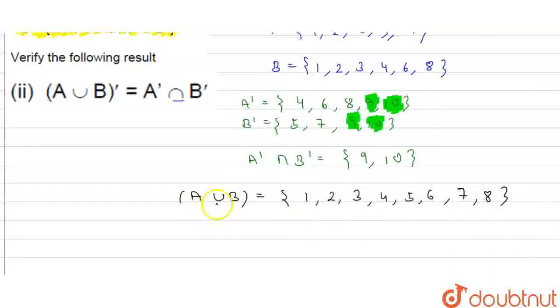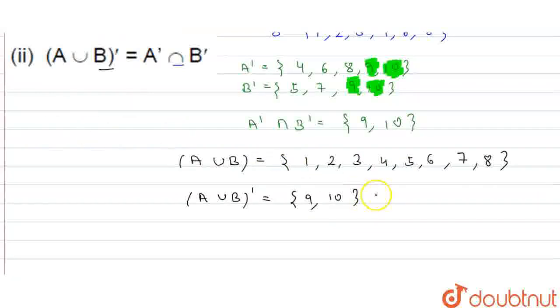Now we have A ∪ B, but the question asks for (A ∪ B)', which means we need to find the complement. According to the universal set, which elements are not present in this? 9 and 10 - only these elements are not present, from 1 to 8 all are present. So (A ∪ B)' contains 9 and 10. Now check the LHS and RHS - both have the same elements, which means LHS equals RHS. Hence proved.